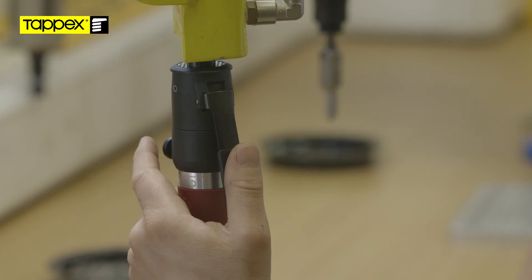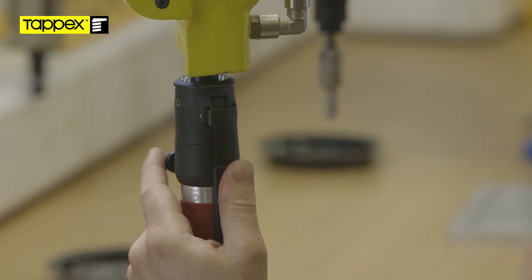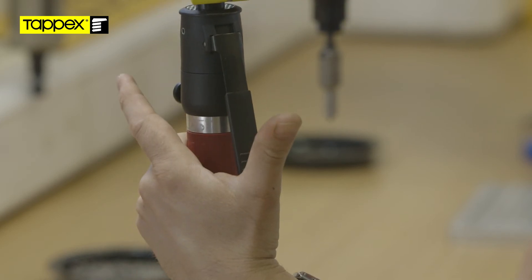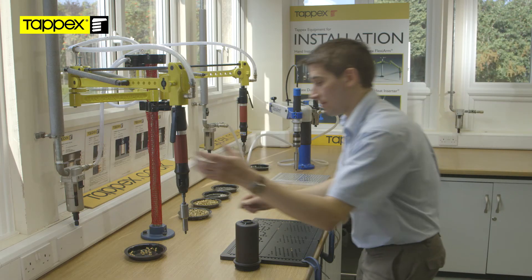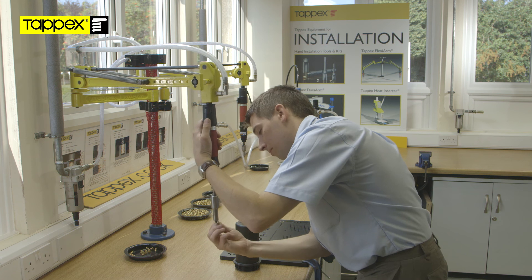Disengage the production driver from the insert by depressing the reversing button while continuing to hold the actuating lever. The lost motion device in the production driver will prevent the friction lock created against the end of the insert from backing the insert out.